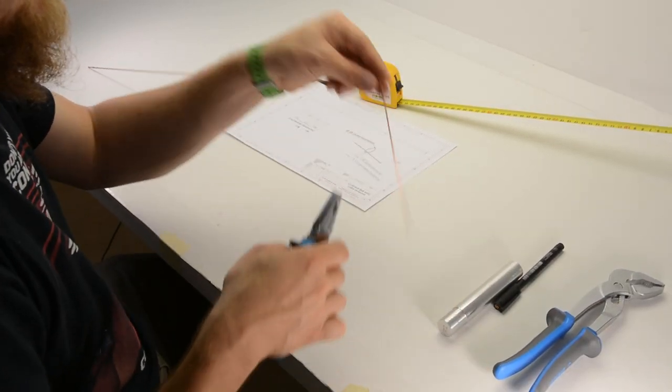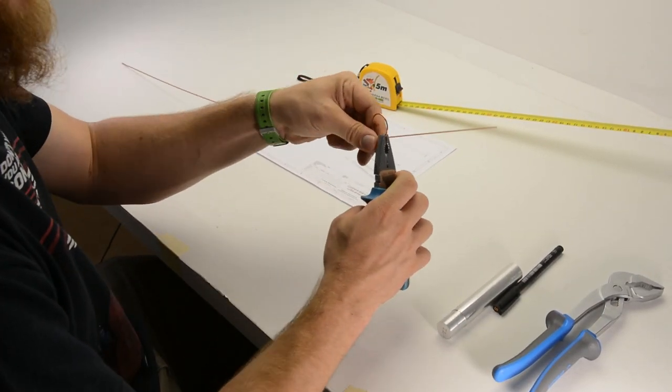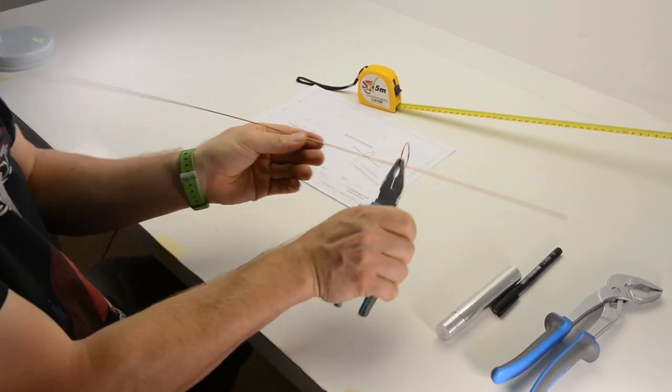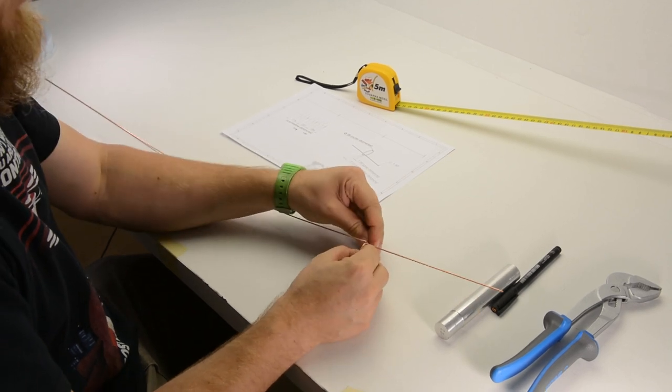Then we take the pliers again and do another 90 degree bend so we end up with the first loop of the antenna.